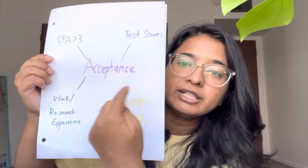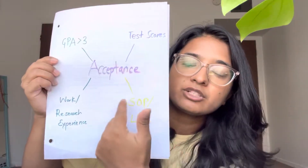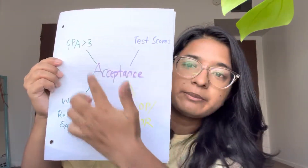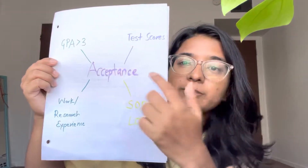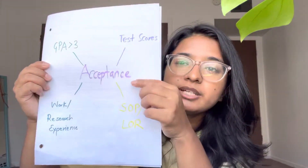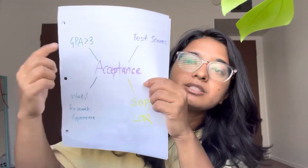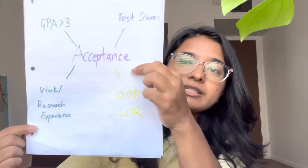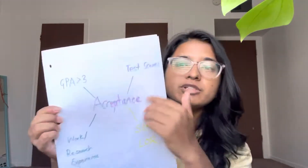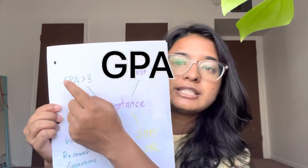This is acceptance. Acceptance is called a Pillar. If you have the acceptance rate, you will have an important role. So the first one is GPA.